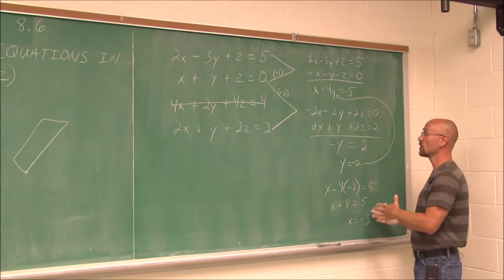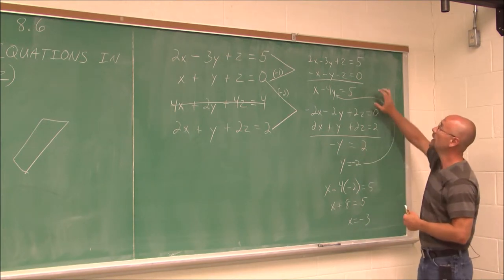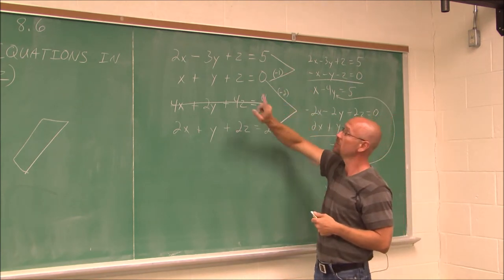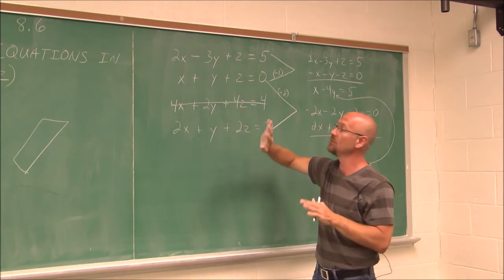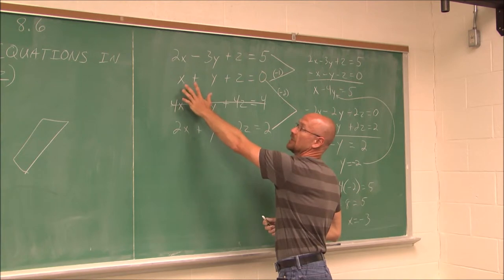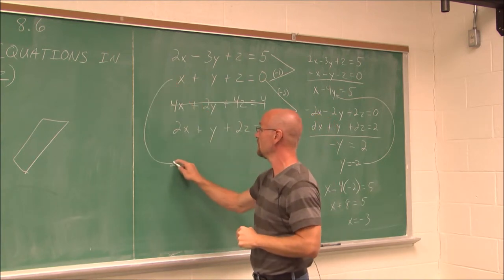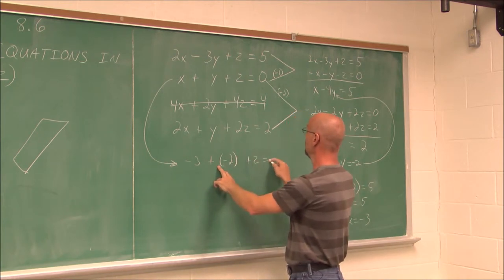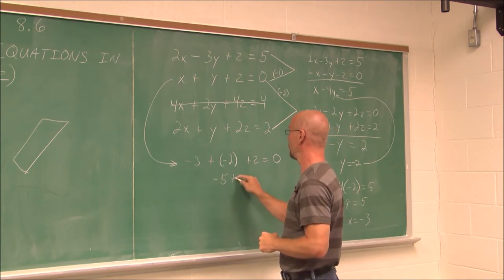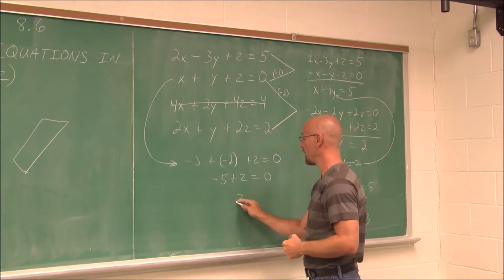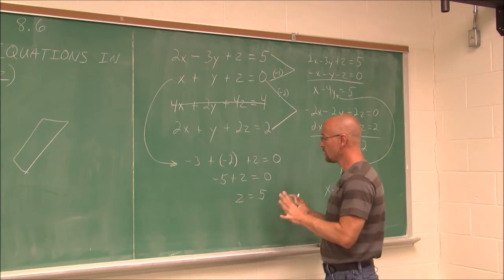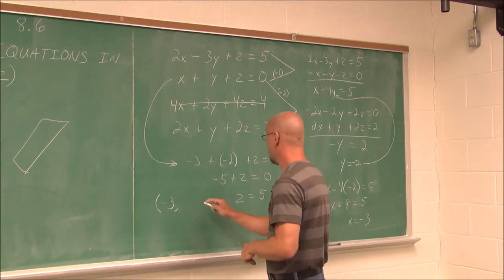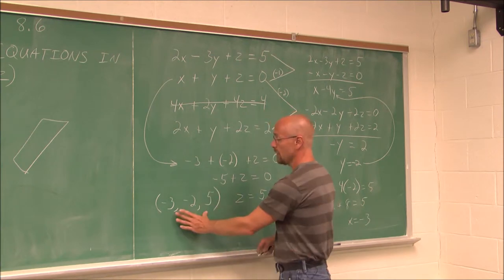To find z, I go back to the original equations. I'll choose the one with the smallest coefficients: x plus y plus z equals 0. Plugging in x equals negative 3 and y equals negative 2: negative 3 plus negative 2 plus z equals 0, so negative 5 plus z equals 0. Adding 5 to both sides gives z equals 5. So the solution is the ordered set: negative 3, negative 2, 5.